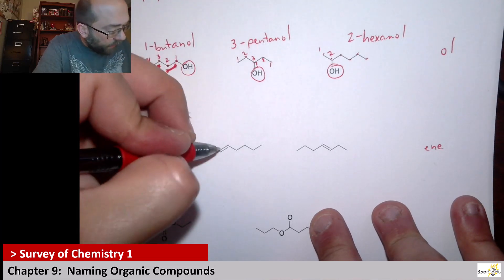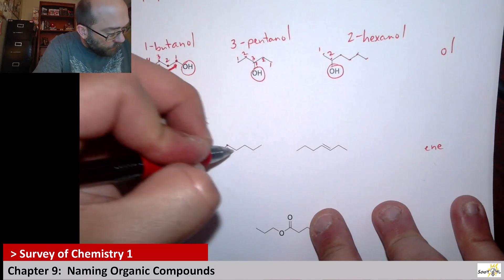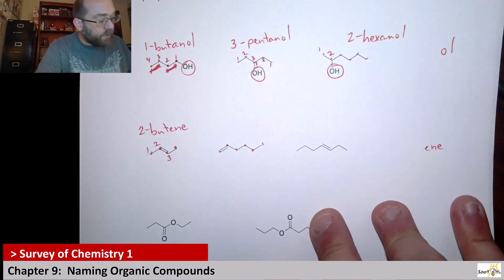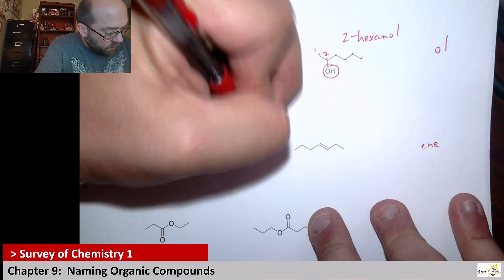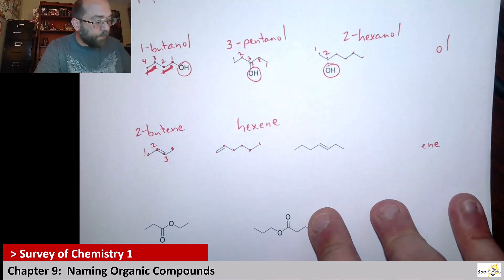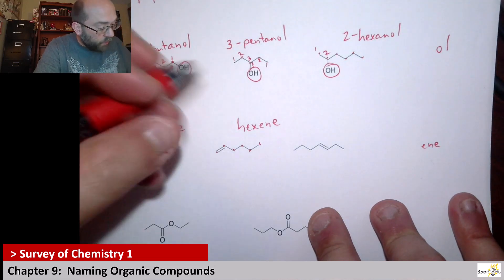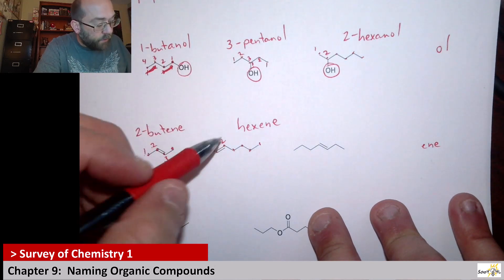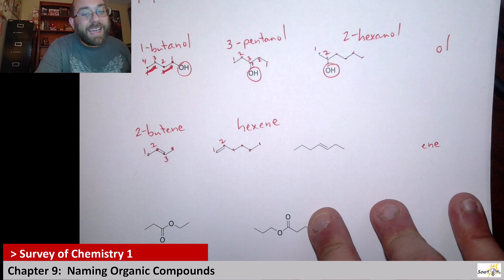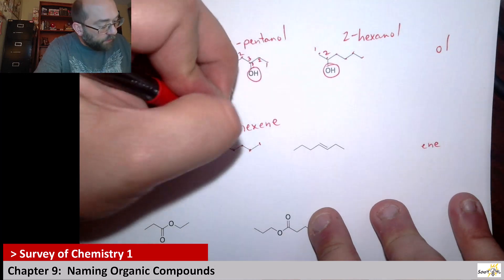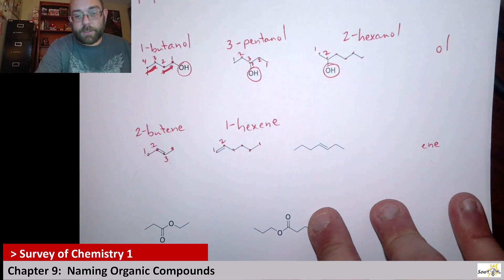Likewise, here we get one, two, three, four, five, six — so this is hexene. When we go to number, we're going to number on this end. The double bond goes through one and two, but we use the first carbon that has the double bond. So it's 1-hexene.